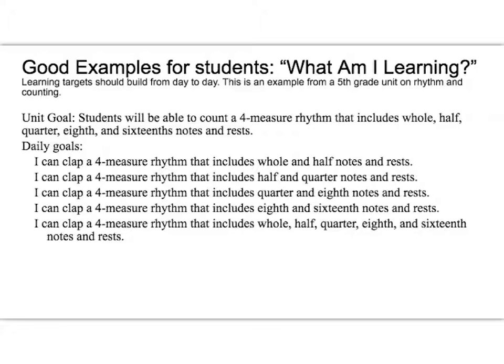This is another example, this time in elementary music. The unit goal is: students will be able to count a four-measure rhythm that includes whole, half, quarter, eighth, and sixteenth notes and rests. But we break that goal down day by day — first they clap whole and half notes, then quarter notes and half notes, then quarter and eighth notes, then eighth and sixteenth, then we put them all together. See how each day has its own goal, but it's building as we move forward in order to meet the unit goal.